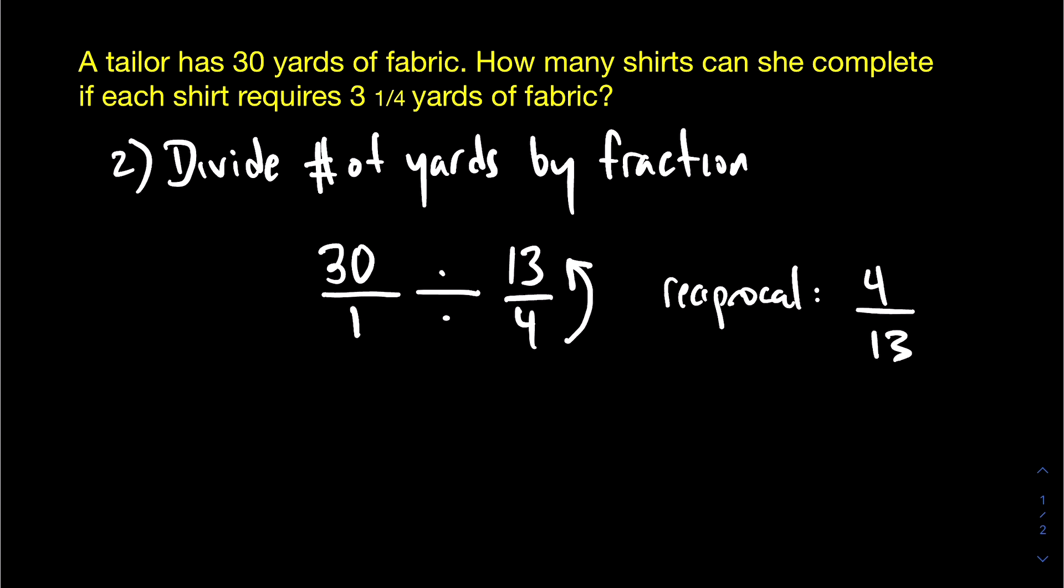So instead of dividing thirty over one divided by thirteen over four, we're going to multiply by the reciprocal, which is this flipped fraction.